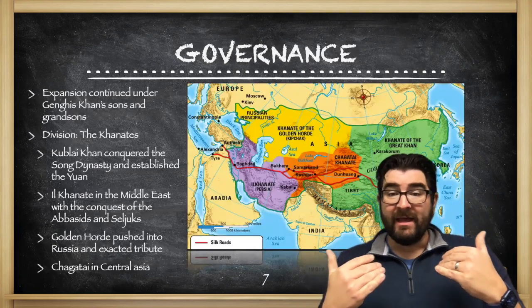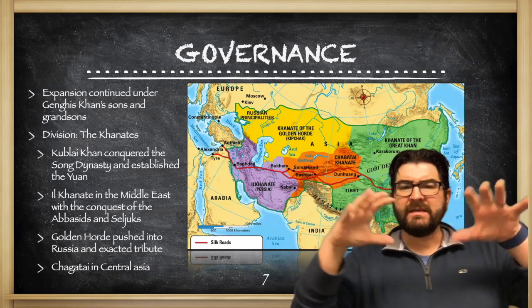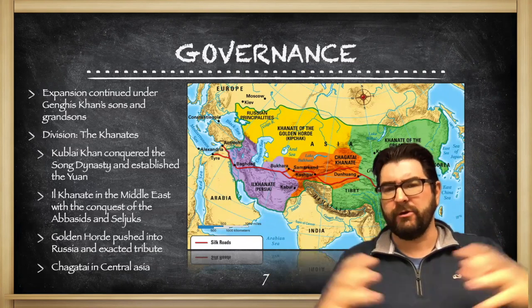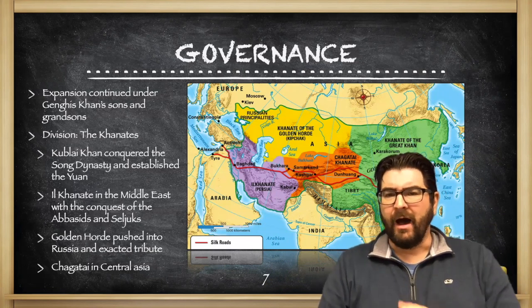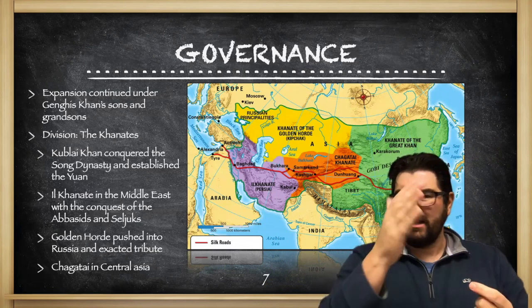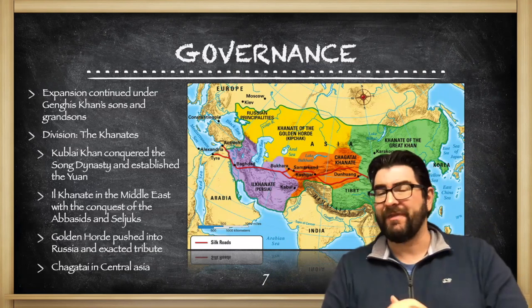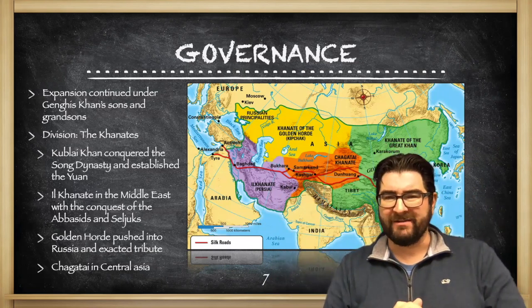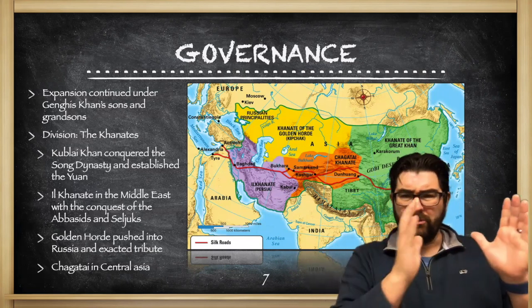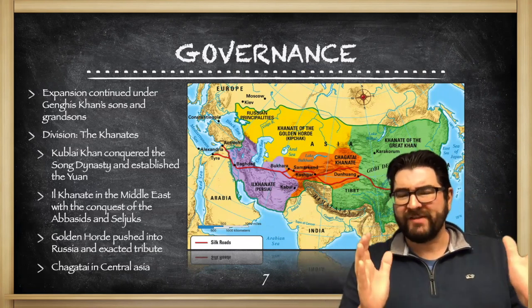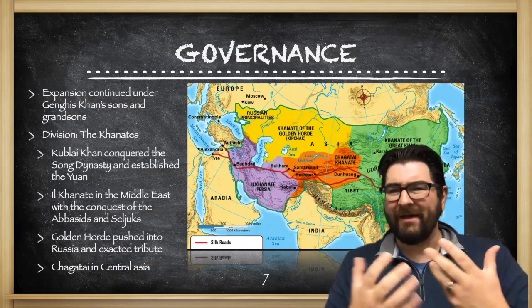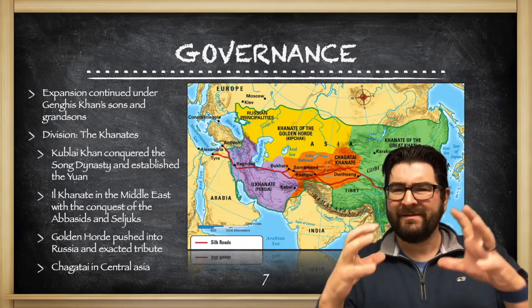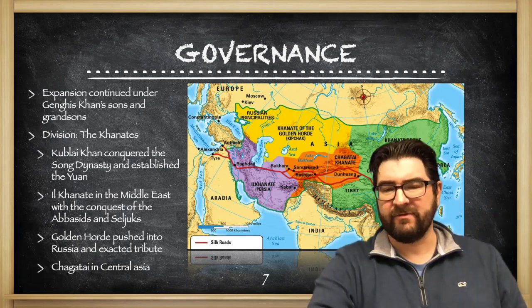After Genghis Khan dies, his massive empire is going to be divided amongst his sons and grandsons, and then they will continue to expand the khanates even further. This is a strategy we see in many parts of the world — for example, the Inca took a massive empire and divided it into provinces. These khanates, over time, will be ruled more separately, and oftentimes we're going to see some rivalries develop between these sons, and over time it'll be a less cohesive unit.